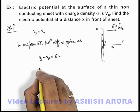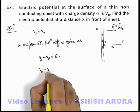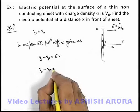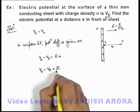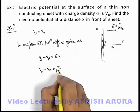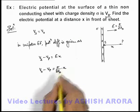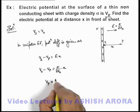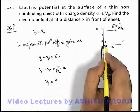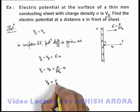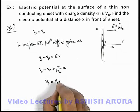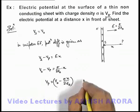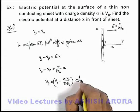So here we can write V_S as V-not, and V-not minus V_P equals sigma by 2 epsilon-not multiplied by x. From here we can directly find the value of potential at point P at a distance x from the sheet: it is V-not minus sigma·x by 2 epsilon-not. This is the answer to this problem.